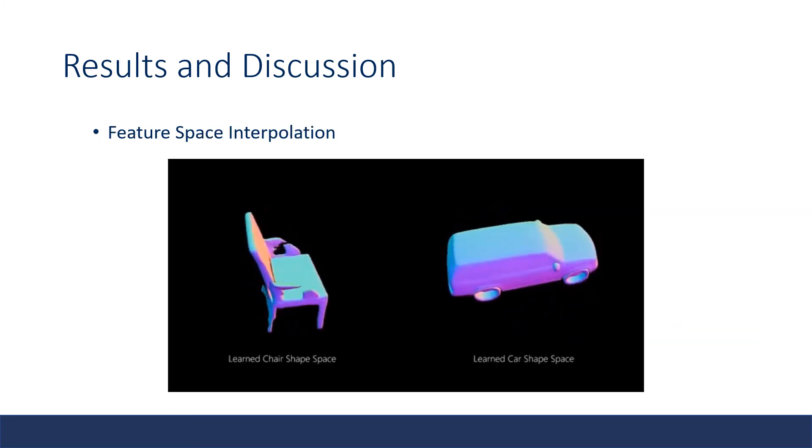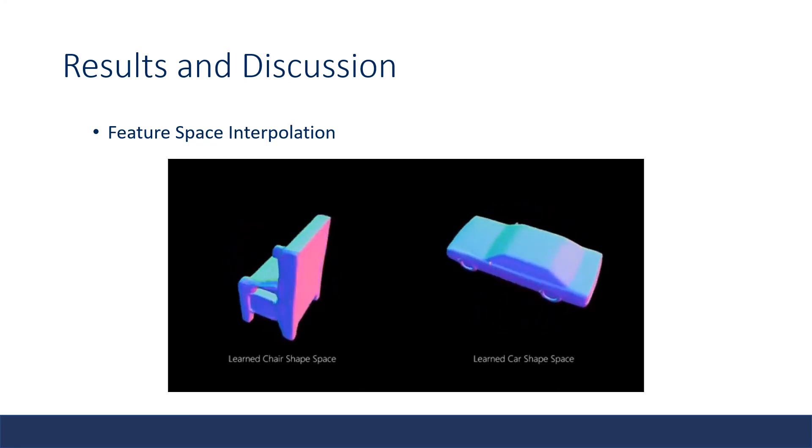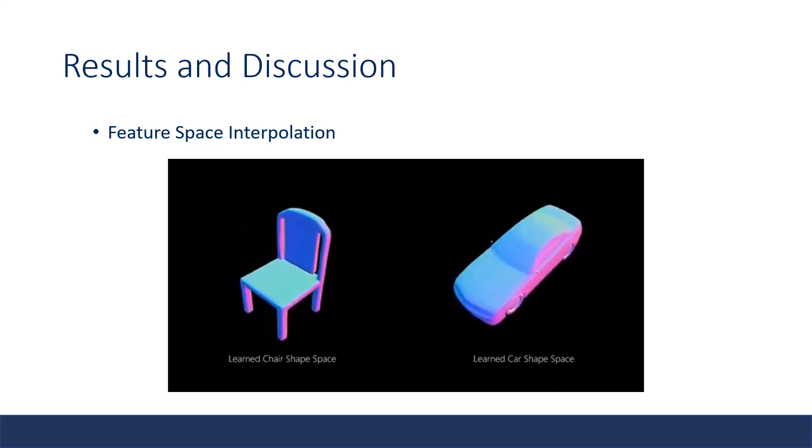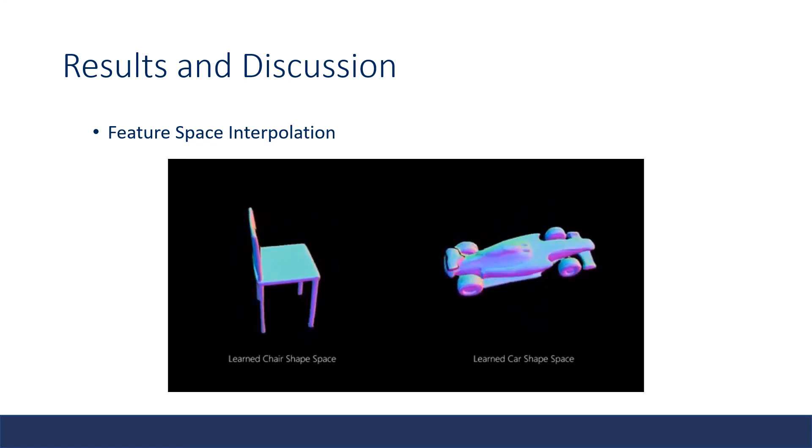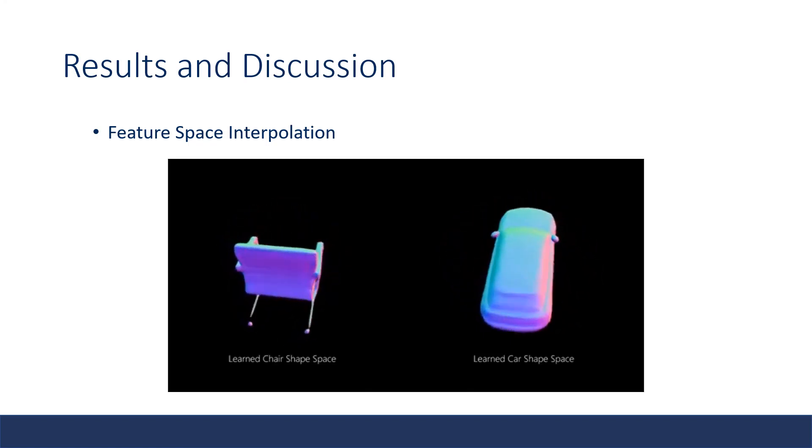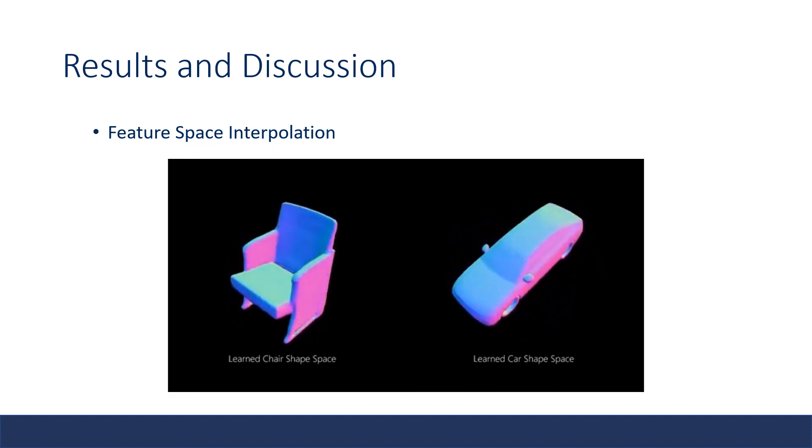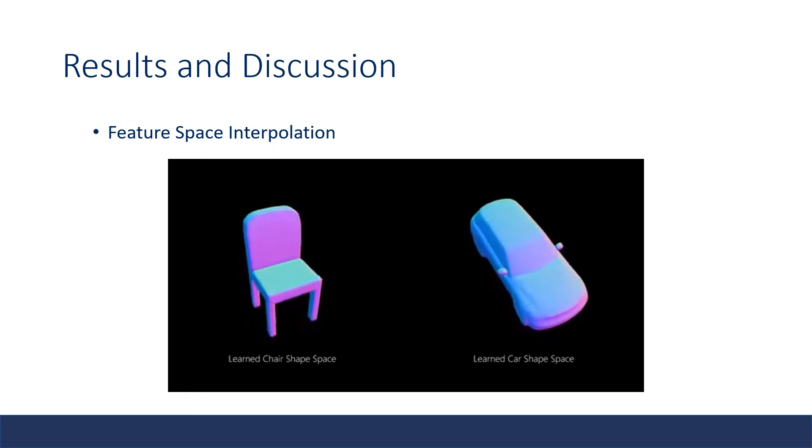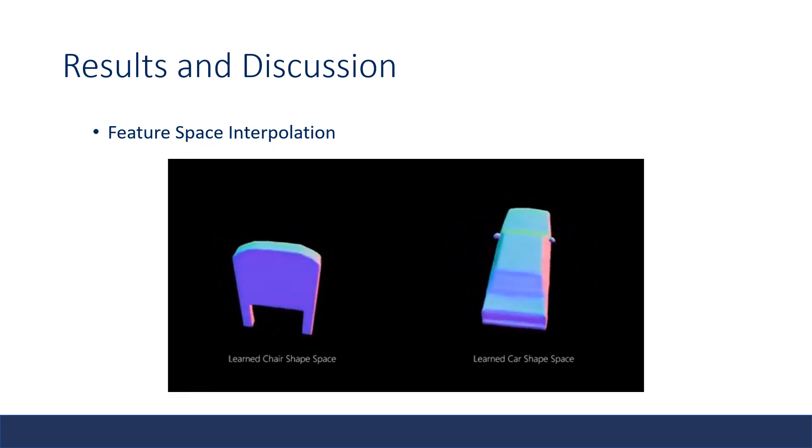The authors have an interesting demo video of feature space interpolation. As you can see, the transition between shapes is smooth, as the parts are emerging and changing size. This demonstrates that the learned feature embedding space is complete and continuous. This explains the capability of reconstructing novel shapes, which could be seen as the interpolation of two scene shapes.